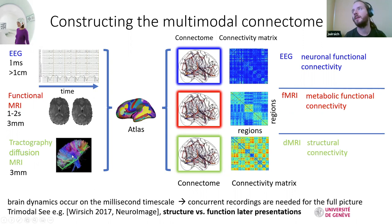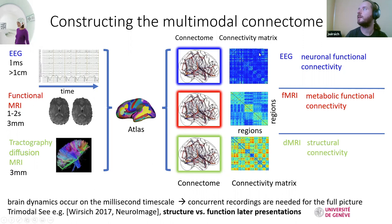We can also use tractography at a good resolution of three millimeters or better. The idea is to project everything into the same atlas to build connectomes from the structure and function, and transform this into a connectivity matrix, where each value signifies the connectivity strength between two brain regions.